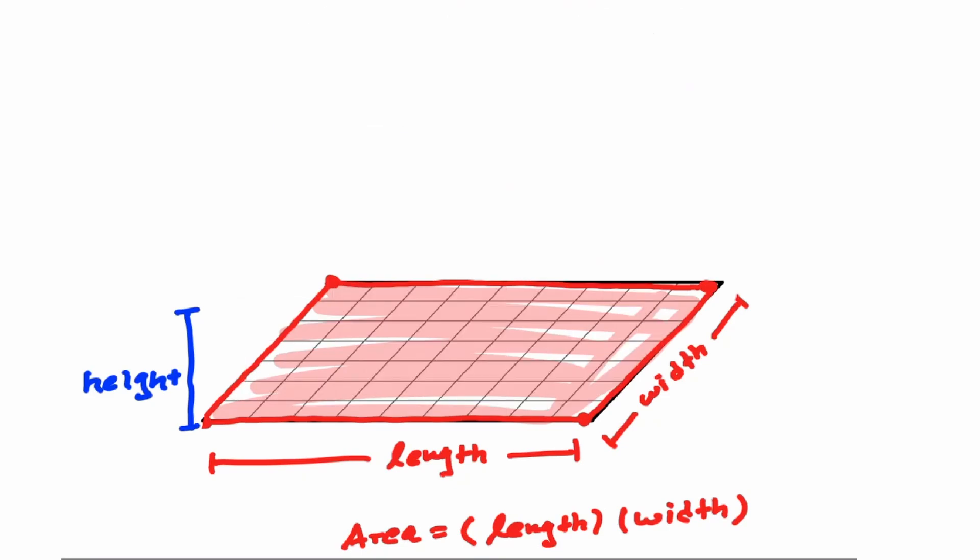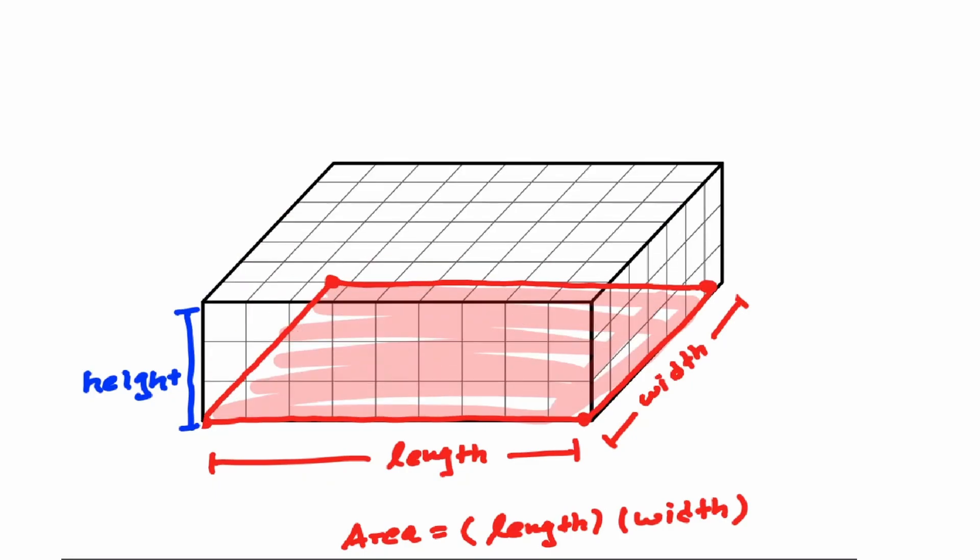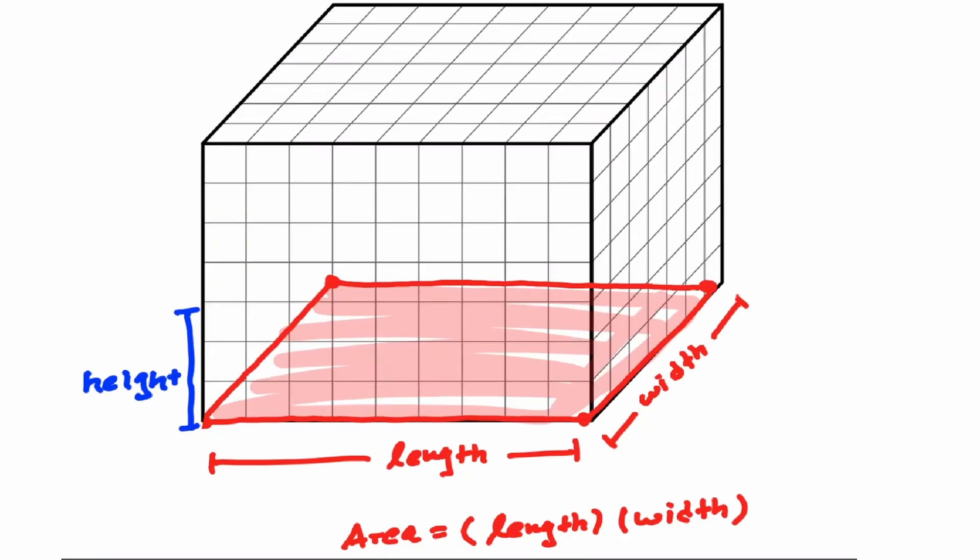And now we can say that the volume of a prism is nothing more than the area of the base times the height of the figure.